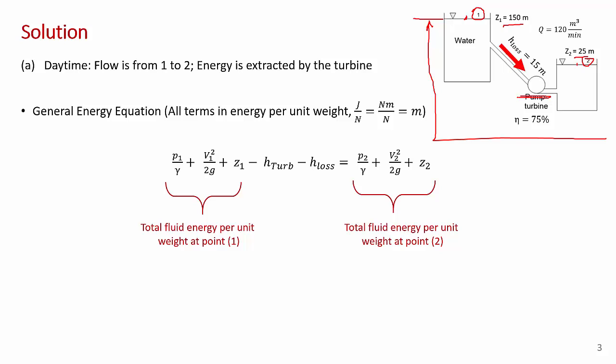This is simple energy accounting assuming flow goes from point 0.1 to 0.2. We can make simplifications: the pressure at points 0.1 and 0.2 is atmospheric, which doesn't change significantly over 125 meters, so P1 and P2 cancel out. We've picked points right at the surface of the reservoir, far away from the pipe inlet and outlet, so the velocities there are approximately zero — we can set V1 equal to 0 and V2 equal to 0.